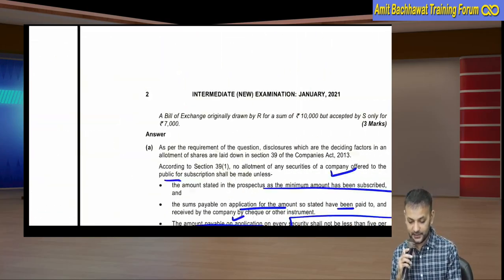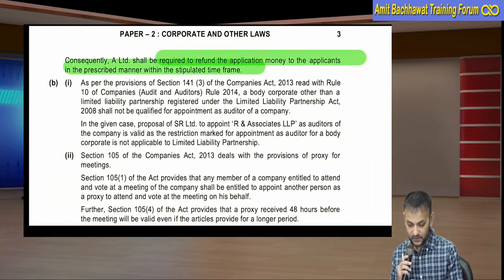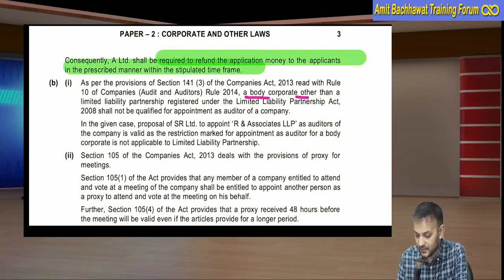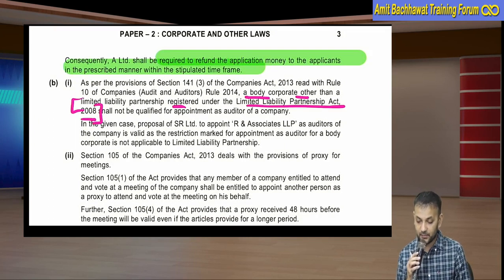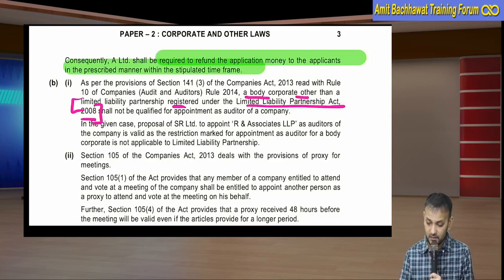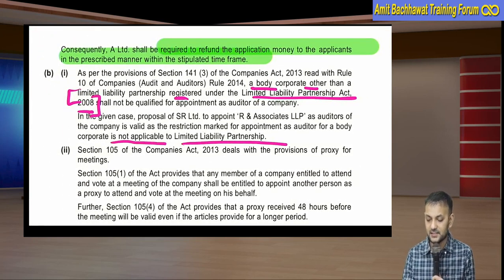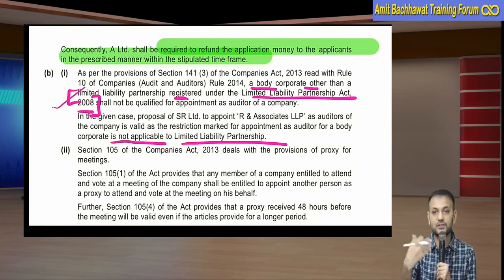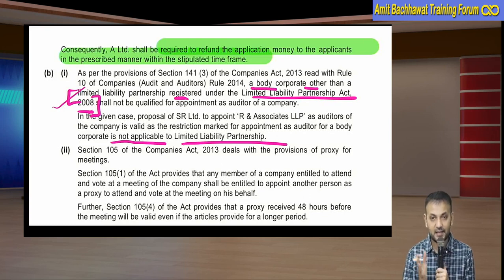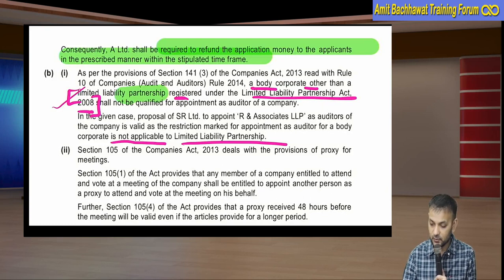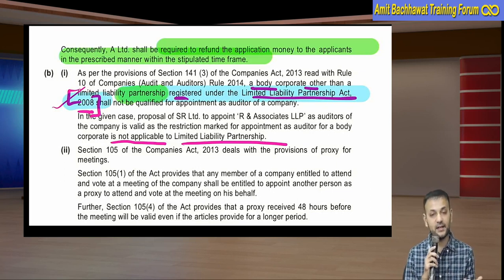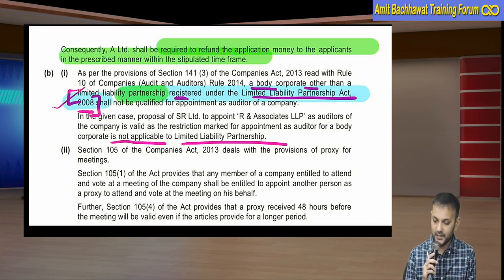As per Section 141, a body corporate cannot be appointed as auditor. But the exception is an LLP registered under the LLP Act 2008 - meaning Indian LLPs can be appointed. In the given case, the proposal is valid as the restriction on appointment of a body corporate is not applicable to LLPs registered under the LLP Act. If it were a foreign LLP, things would be different. Writing just 'LLP' will not earn marks because foreign LLPs do not qualify under this relaxation - only LLPs registered under LLP Act 2008 get this benefit.